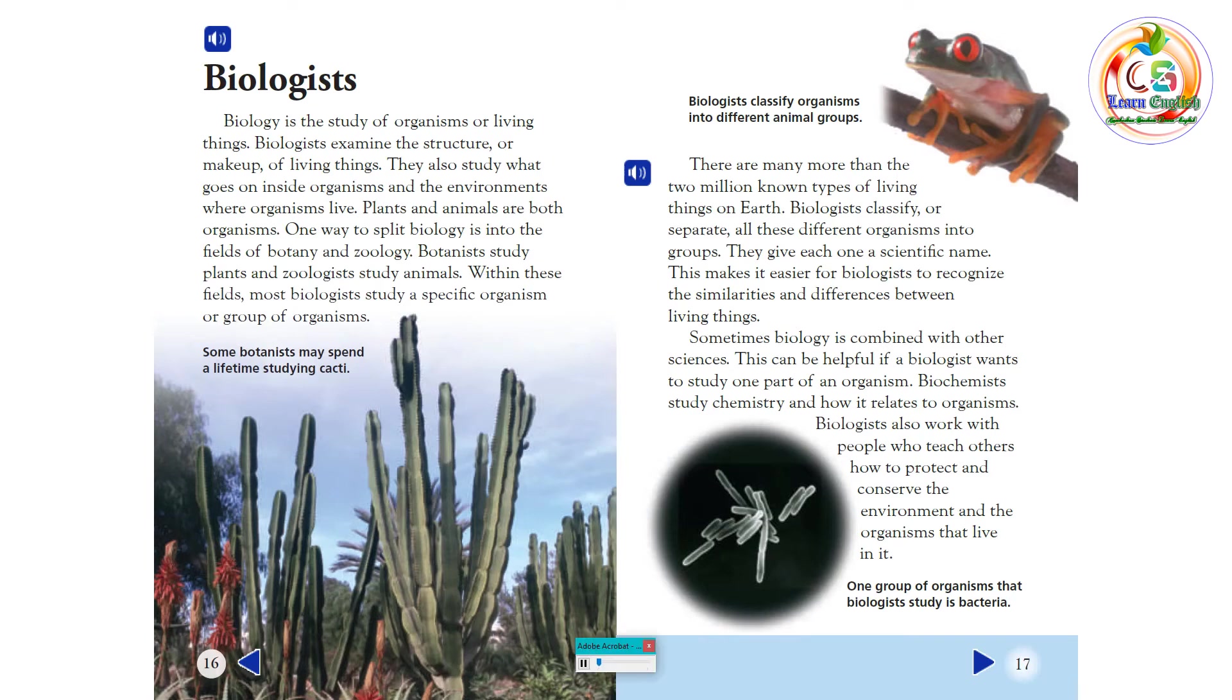There are many more than the two million known types of living things on Earth. Biologists classify, or separate, all these different organisms into groups. They give each one a scientific name. This makes it easier for biologists to recognize the similarities and differences between living things.